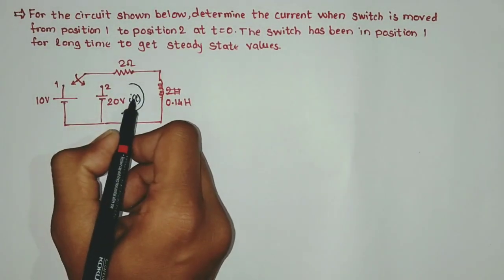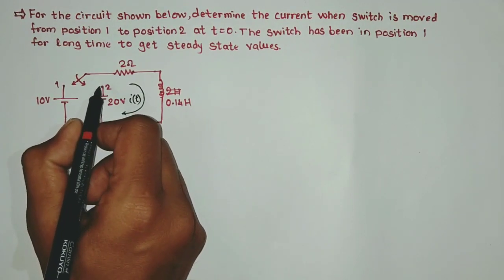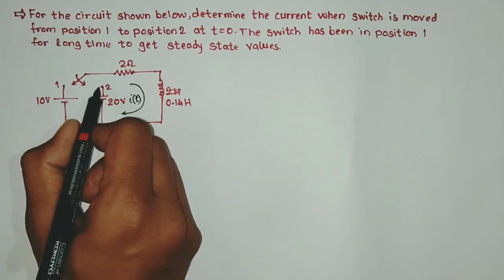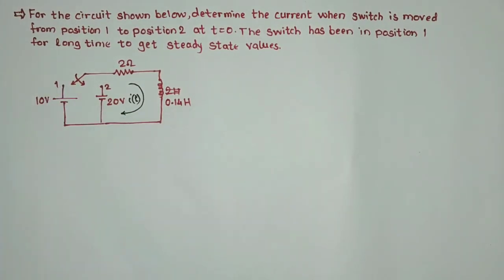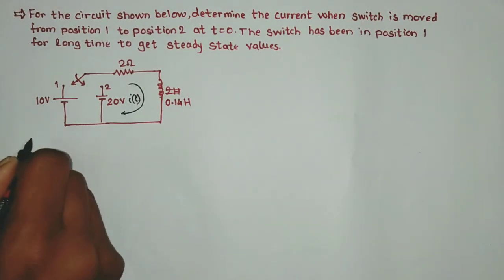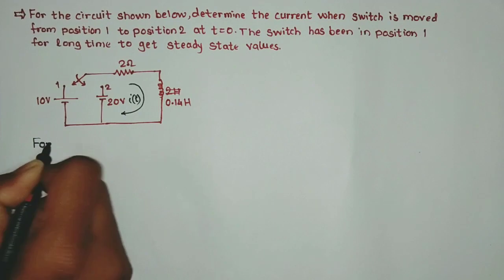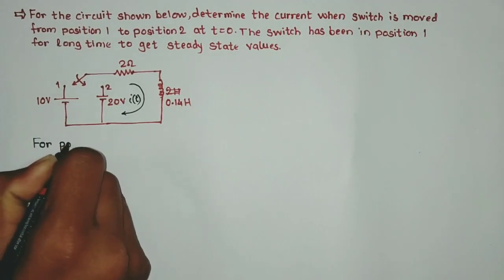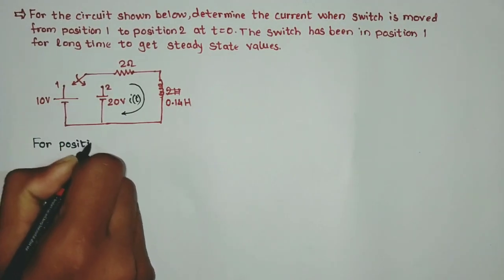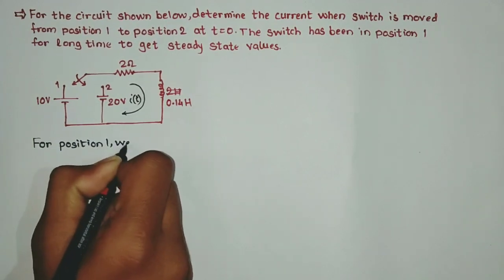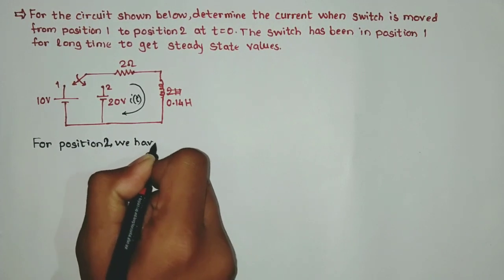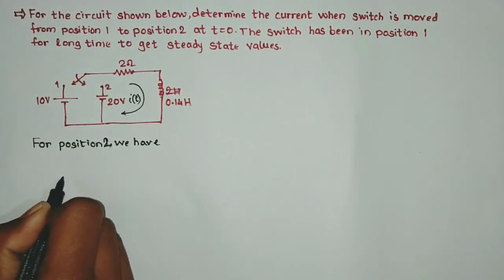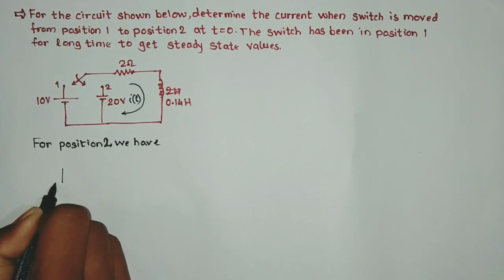To find i of t, we have to first consider when the switch is at position two, and then we will consider the initial condition for switch one. If the switch is at position two, we will have a circuit like this.